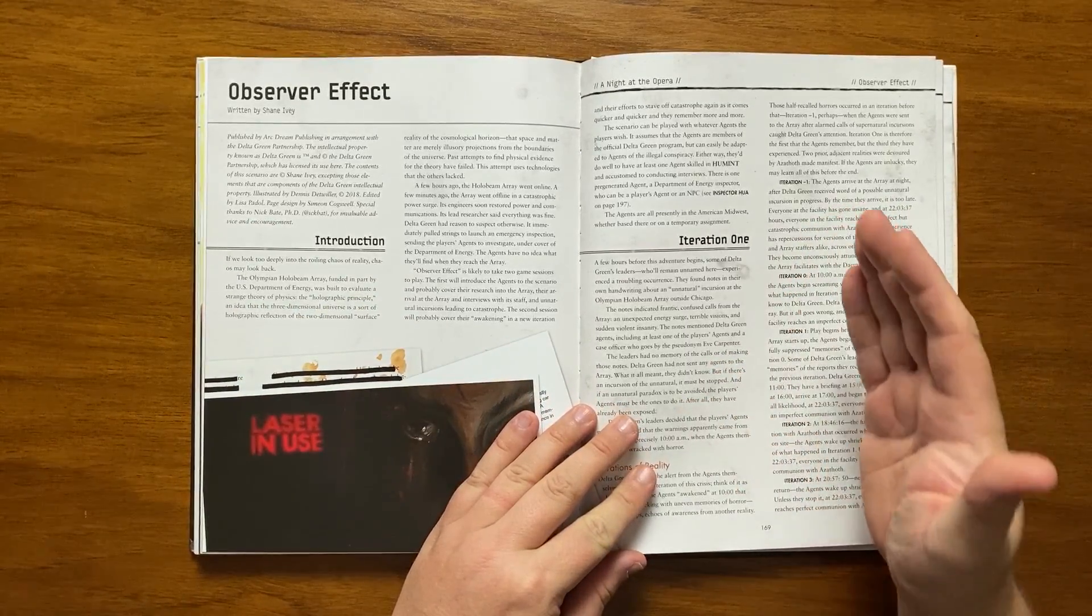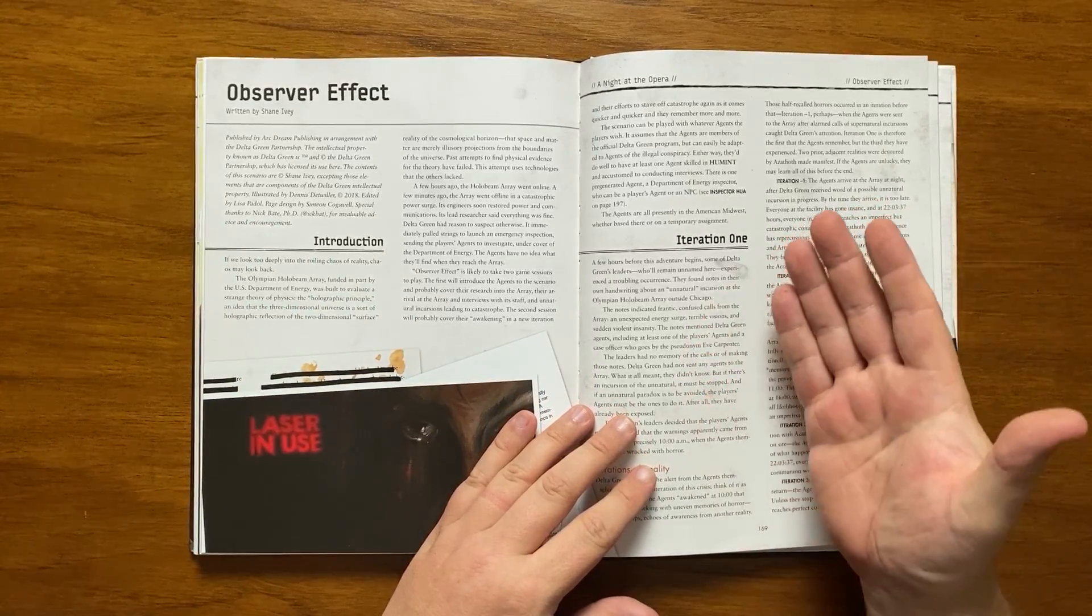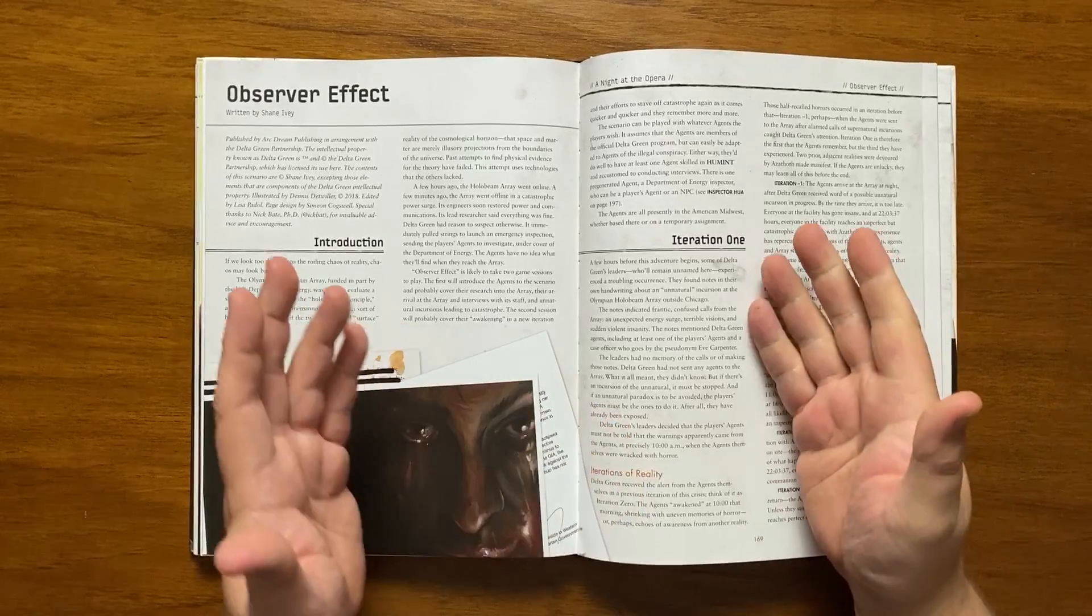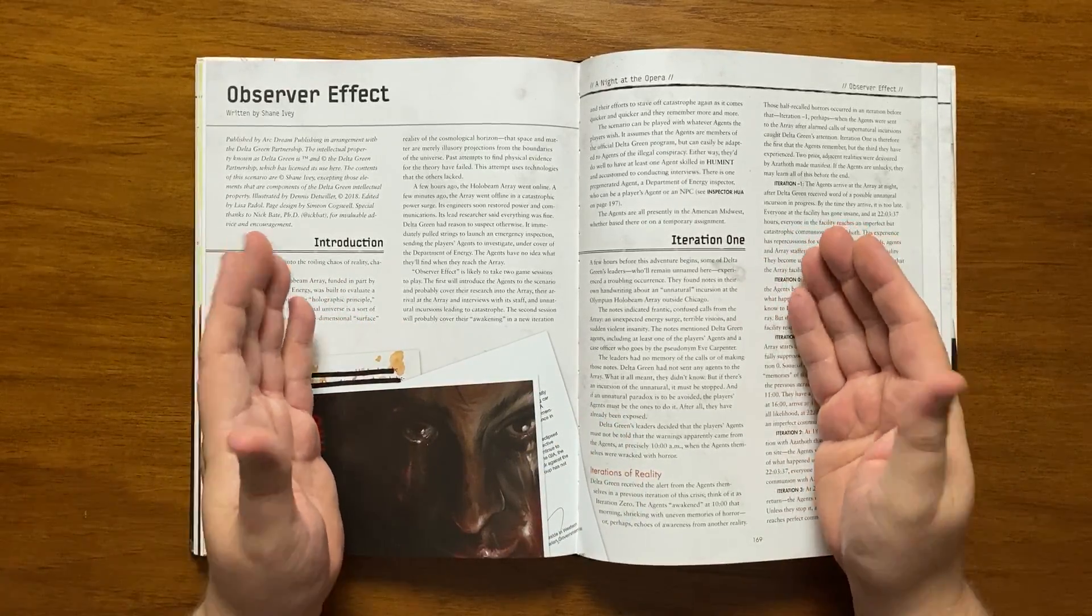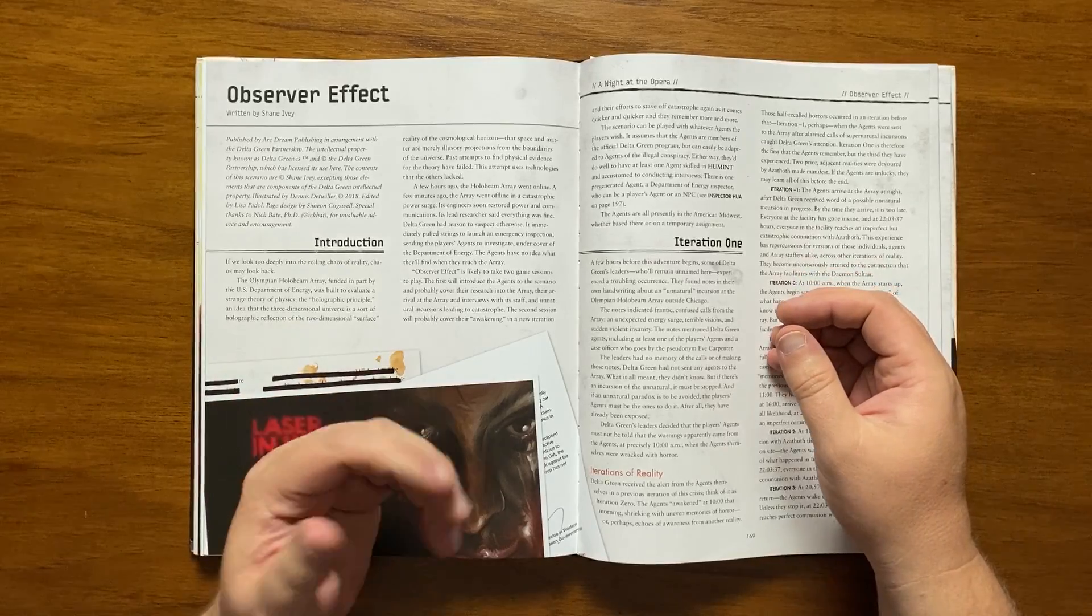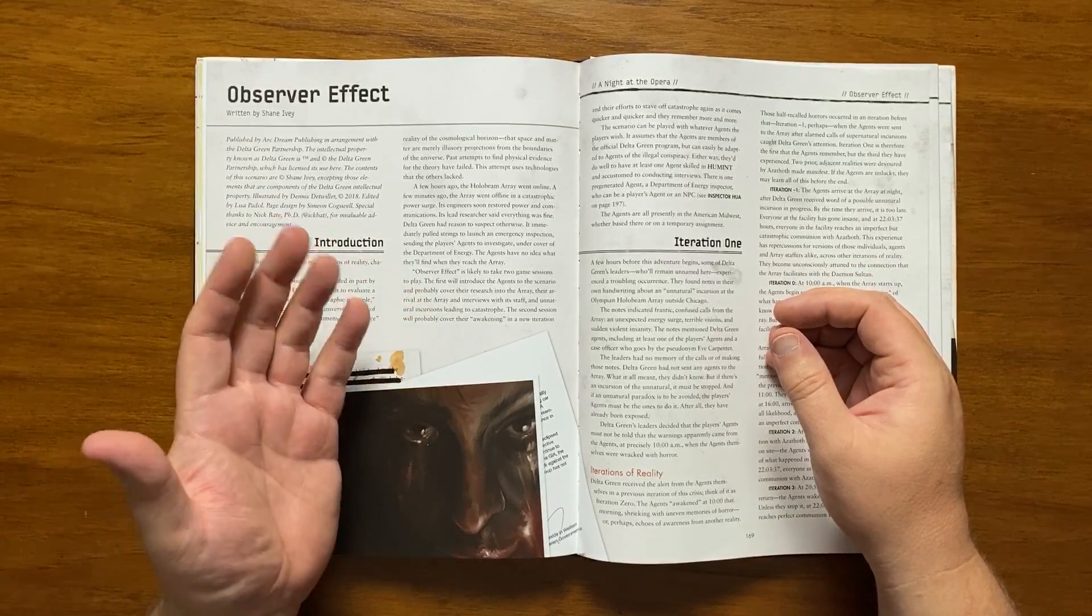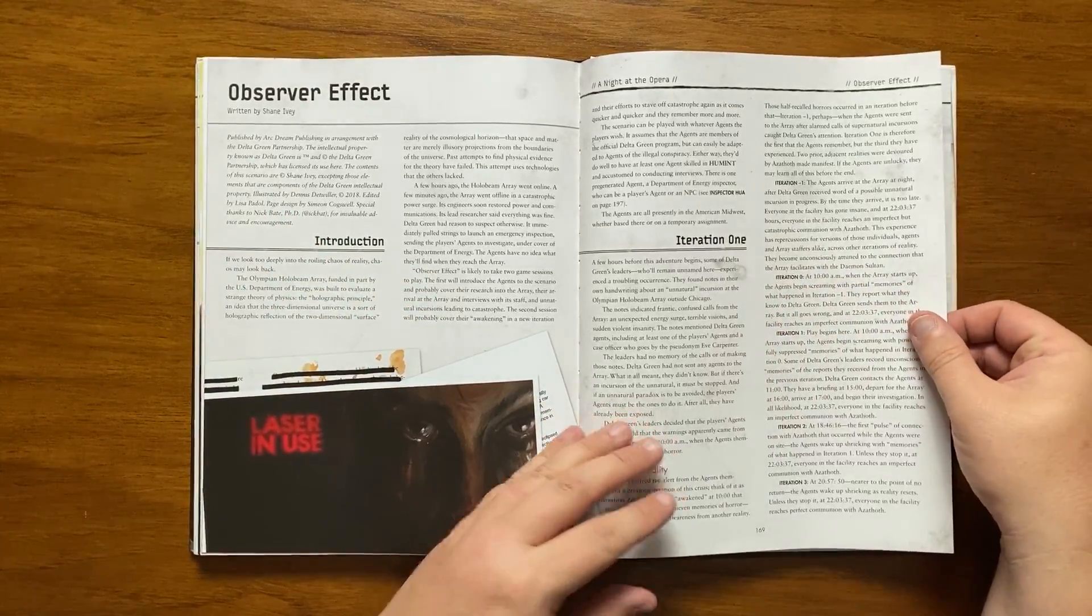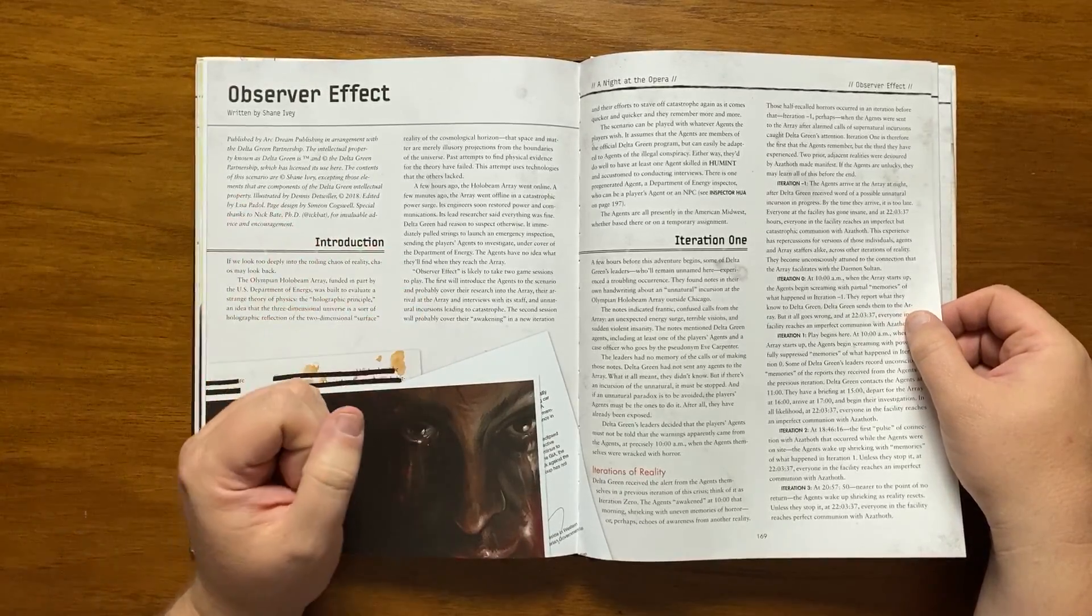With the first being introducing the agents, their research into the array, their arrival and interviews with the staff and unnatural incursions leading to catastrophe, and the second will cover their awakening and their attempts to stave off annihilation as it comes quicker and quicker and they remember more. It suggests having at least one agent with a decent human score and who is accustomed to conducting interviews.